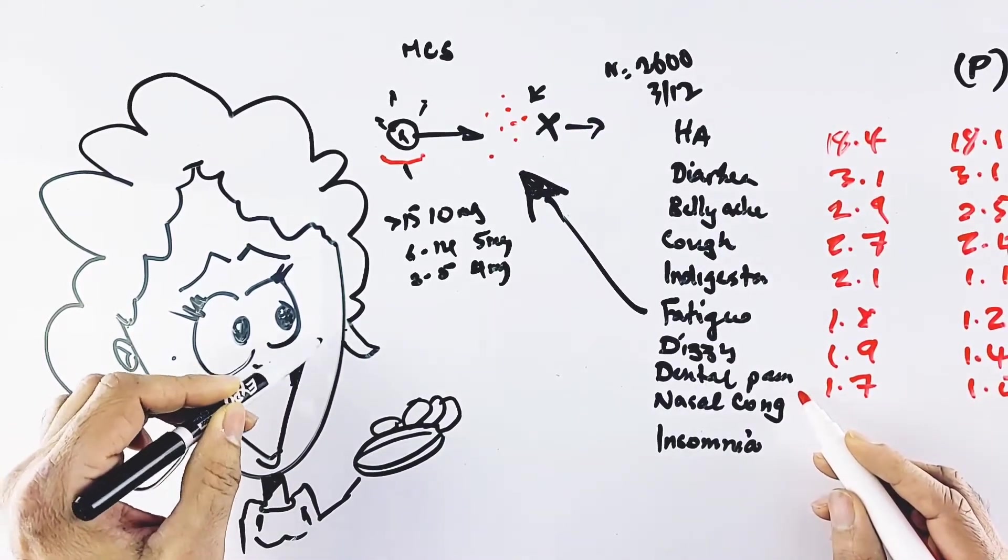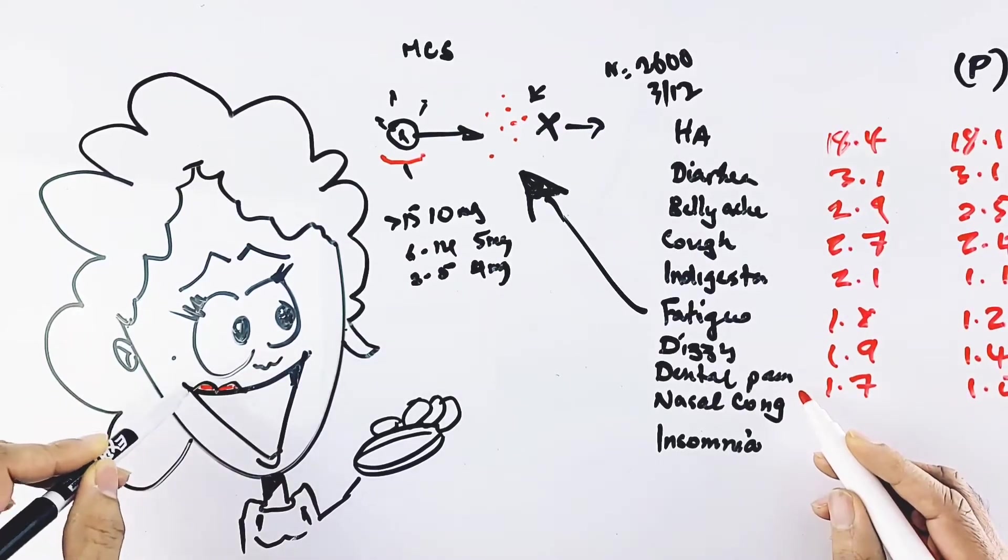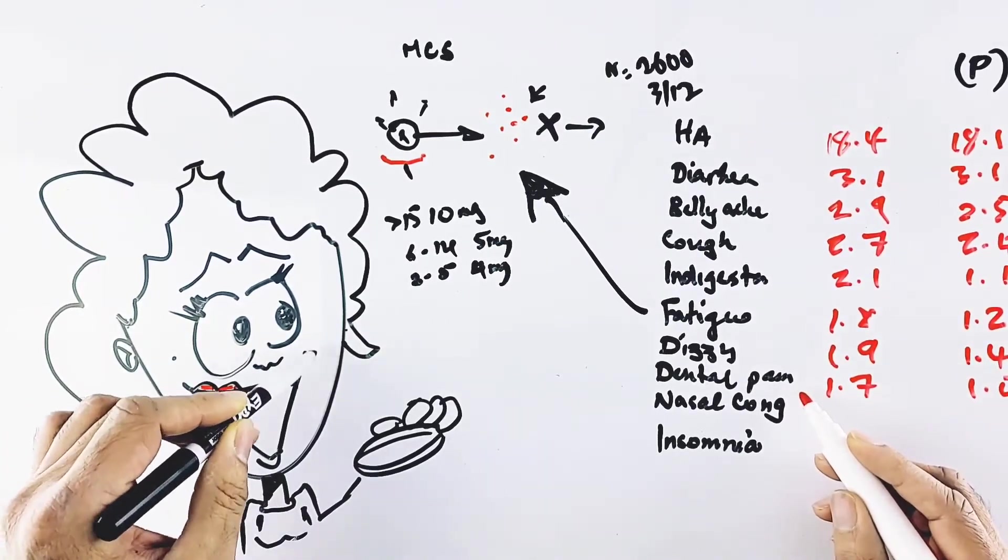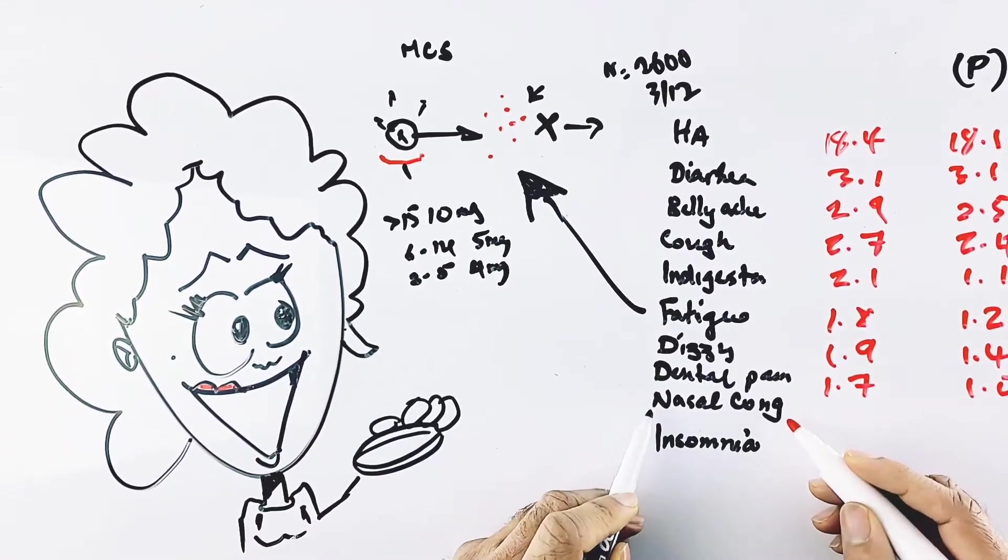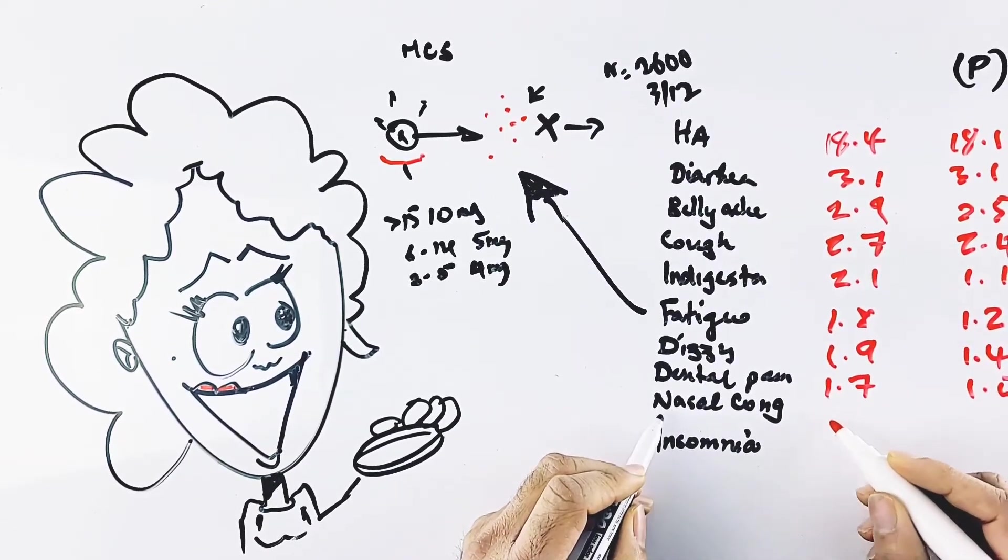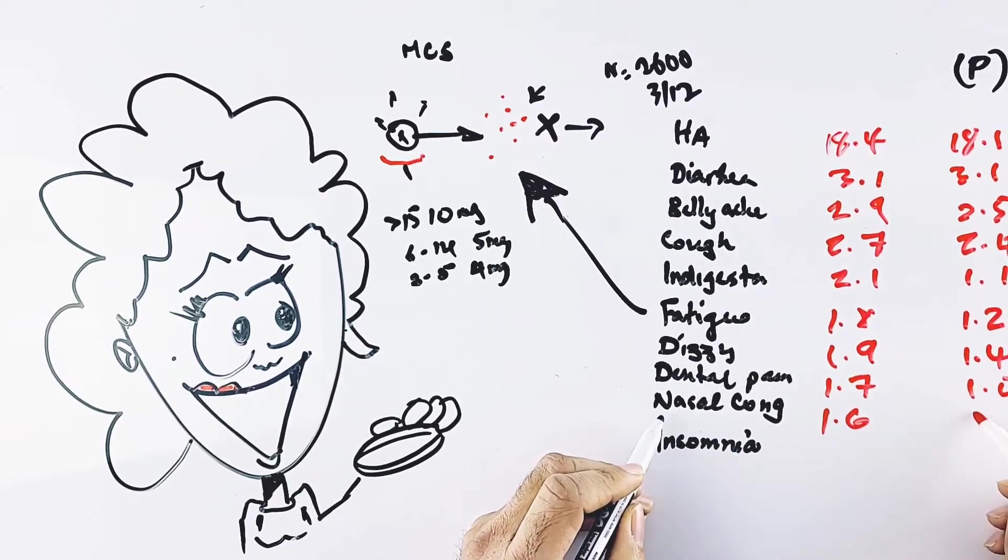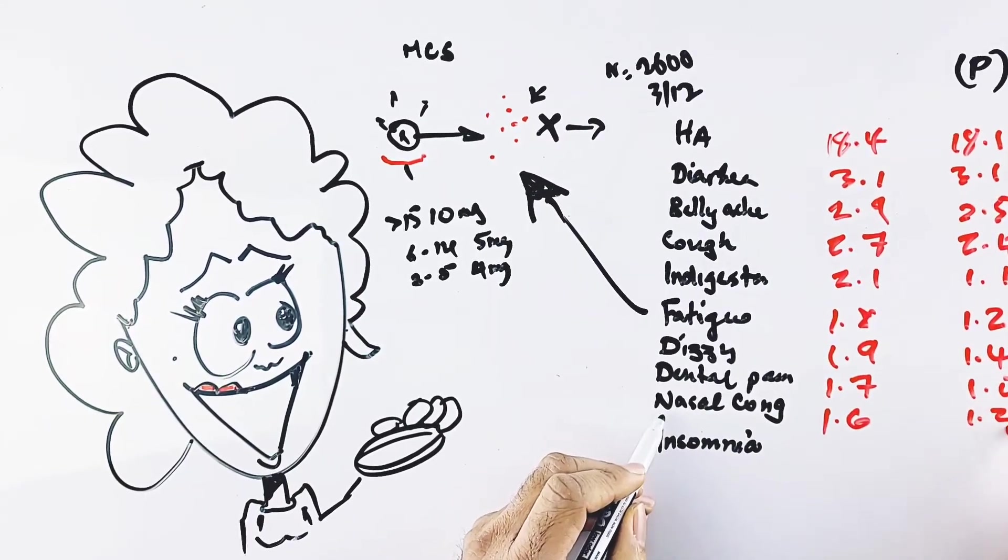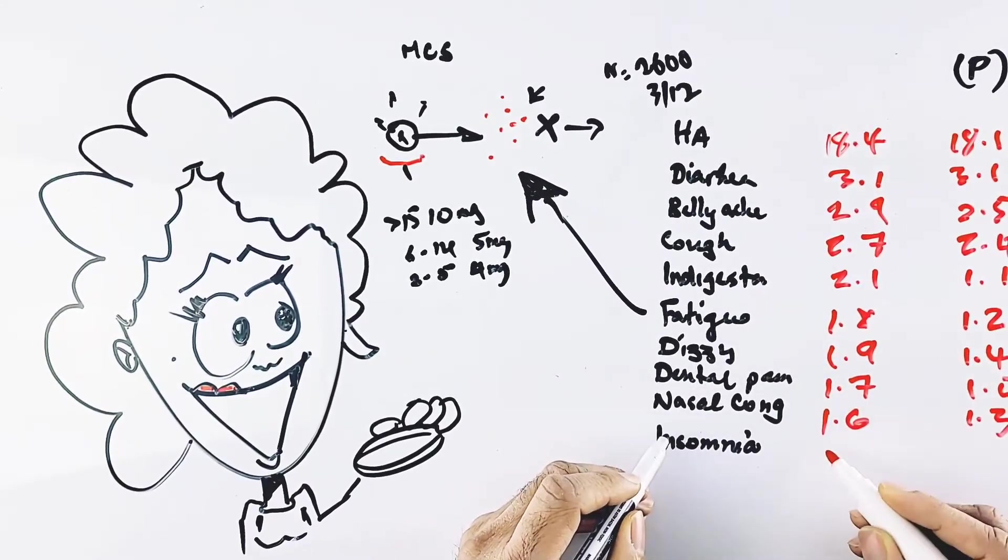would somebody get dental pain? With sinus infections, your sinuses are in your cheeks, and if the floor of the sinuses are involved, you'll get pain in your upper teeth. Next was nasal congestion at 1.6% versus 1.3% on placebo.